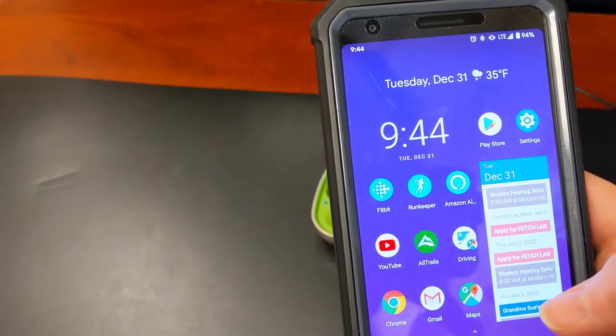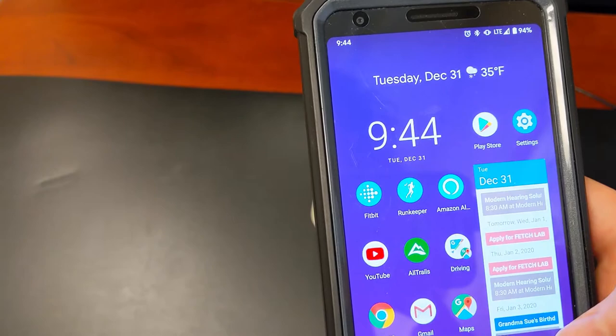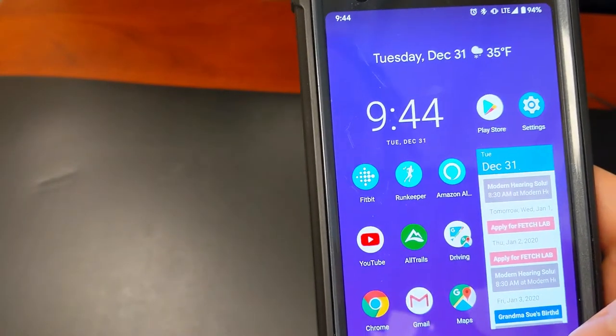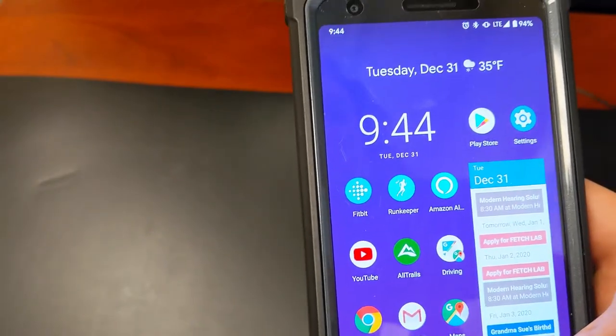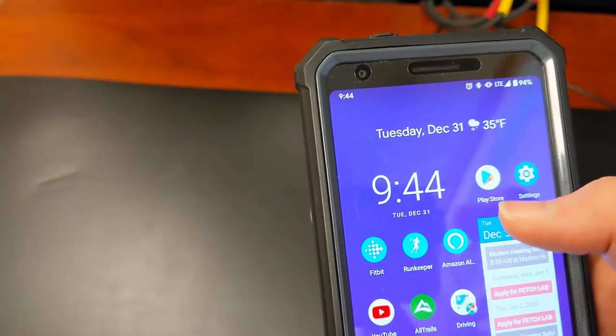The second function that the devices can do on the phone is connect to an app. The app allows you to change the volume and program, make your own program for the hearing devices, and also check your battery life. To connect to the app we first need to install it.